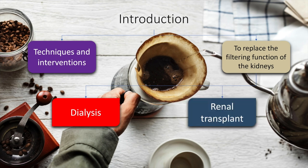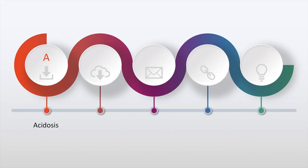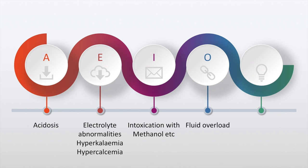In this presentation we will be talking about the various modalities of dialysis. One of the most important concepts is the indications of urgent dialysis. To remember the urgent indications is as easy as knowing the vowels in the English alphabet. A stands for acidosis. E stands for electrolyte abnormalities such as hyperkalemia and hypercalcemia. I stands for intoxication with methanol, barbiturates, etc. O stands for fluid overload. And U stands for uremic encephalopathy and uremic pericarditis.